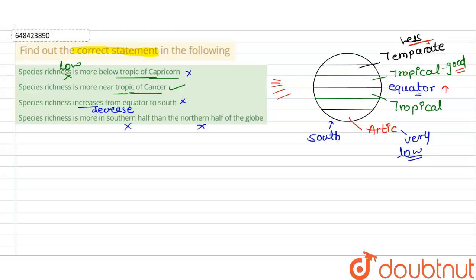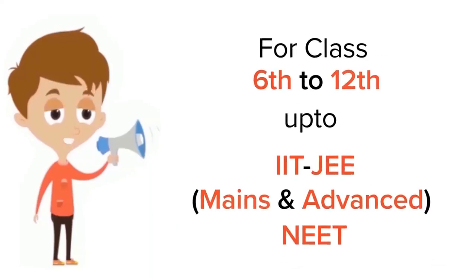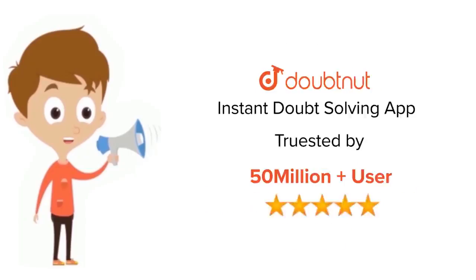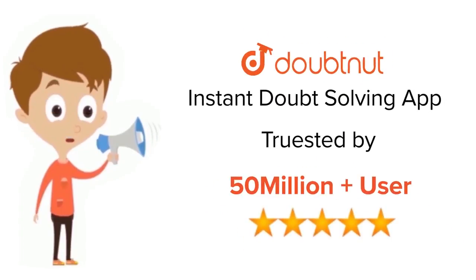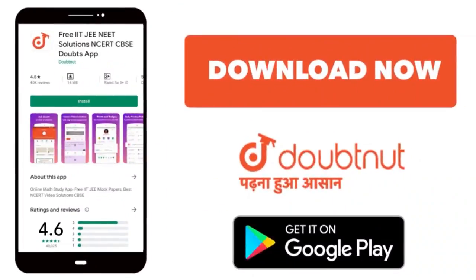So the only correct statement is that species richness is more near the tropical region, and it is highest at the equator. Thank you. For class 6th to 12th, IIT-JEE, and NEET level — trusted by more than 5 crore students — download DoubtNet today.